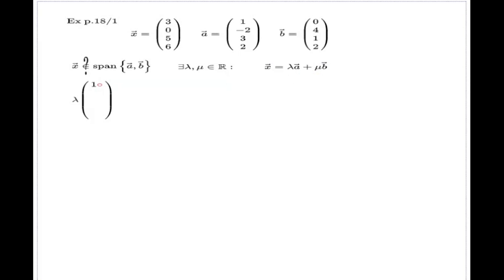So lambda times the vector A and now I replace the vector A with the components of the vector A, 1, negative 2, 3 and 2, mu times the components of the vector B, 0, 4, 1 and 2, and now the right-hand side, which was the left-hand side before, vector X, the components of that is 0, 5 and 6.